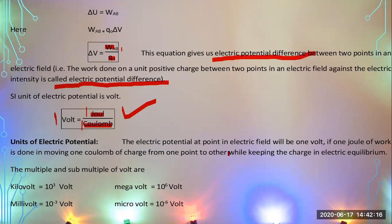The units used to calculate electric potential include volt, megavolt, and microvolt.